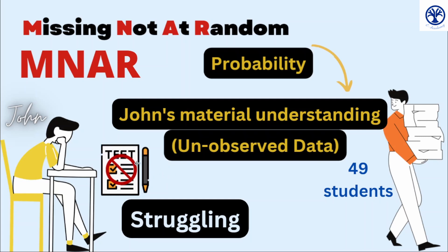When the probability is related to the unobserved data but not to the observed data, we have missing not at random.